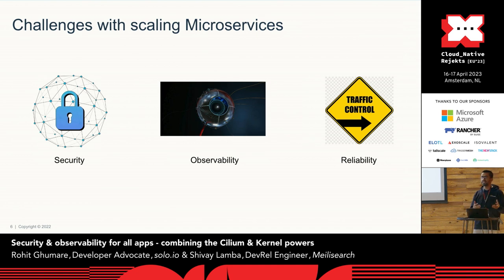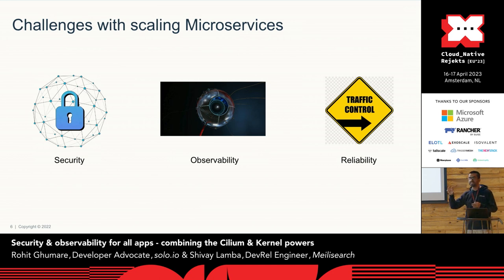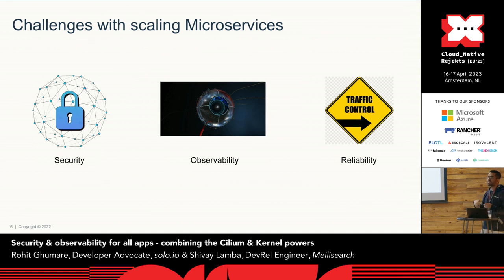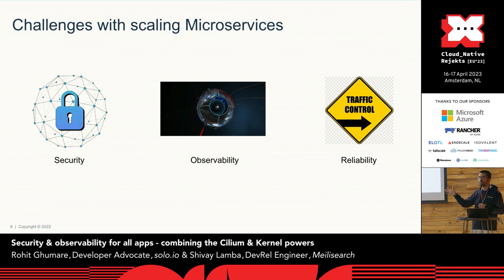Reliability also becomes difficult as you increase the number of microservices — if there are issues, it becomes hard to track which service is causing them. And monitoring and logging requires a robust tool to manage all microservices, reliably ensure you get logs and metrics from each service, and also from the intercommunication between microservices. These are the three fundamental issues: security, observability, and reliability.